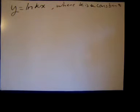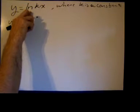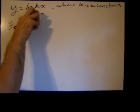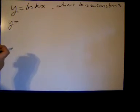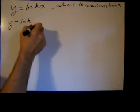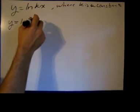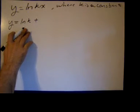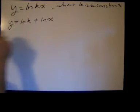I could use the chain rule, but I'm going to use logarithmic properties instead. I'm going to use logarithmic properties to change the ln of kx. The logarithm of a product in the argument is the sum of the logarithms of the arguments. So you can break it up: the logarithm of kx into the natural log of k plus the natural log of x.